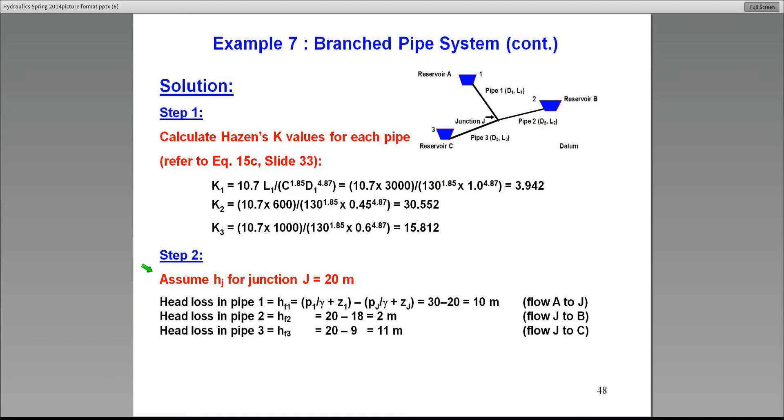Once you've got the K values, we're ready to solve the problem. What I suggest in step 2 is just assume the hydraulic head at junction J initially. In this case, it doesn't matter what you assume, 20 meters, I start with that. That basically puts me between reservoir A, which you remember is 30 meters, reservoir B is at 18 meters. So this puts me between reservoirs 1 and 2. So basically, my continuity equation should say flow coming out of reservoir 1 must go into flow going into reservoir 2 and 3 combined.